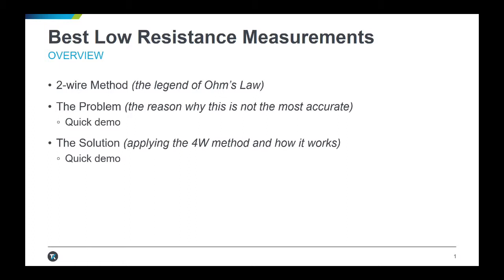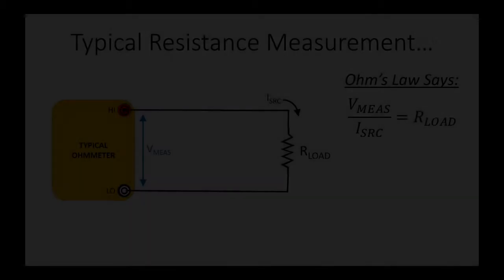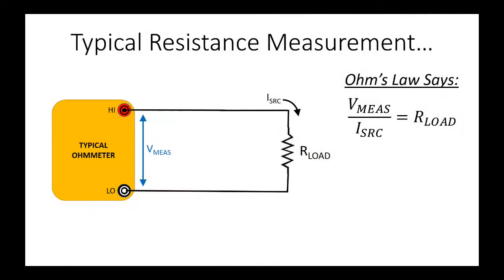The resistance function of your typical ohmmeter or multimeter will source a known current to your device under test, the resistor, and perform a voltage measurement at the terminals where the test leads are inserted. The resistance value is calculated using the sourced current and measured voltage values.